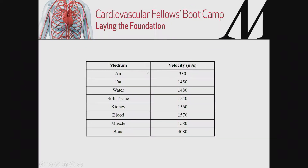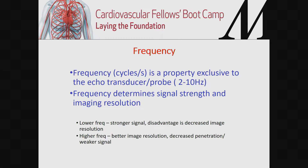Sound has different velocity in different tissues. In echocardiography, since we are imaging the skin and subcutaneous tissue, we use a fixed velocity of 1.5 meters per second — that is the speed of sound in soft tissue. The frequency, which is the number of cycles per second, is a feature exclusive to the echo transducer, or probe, that we are all familiar with.